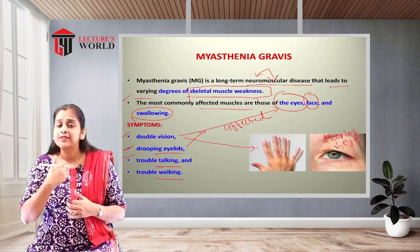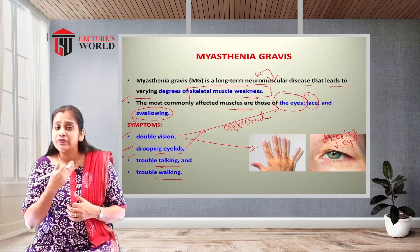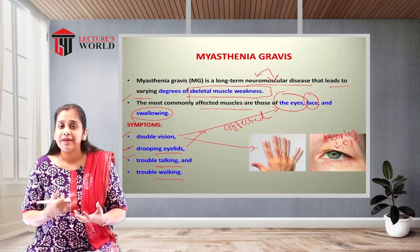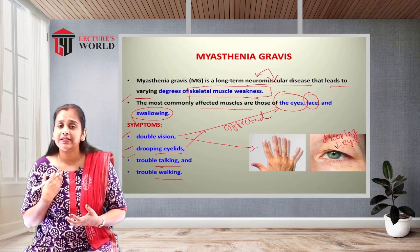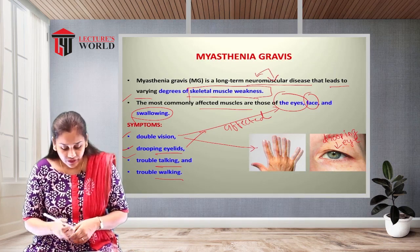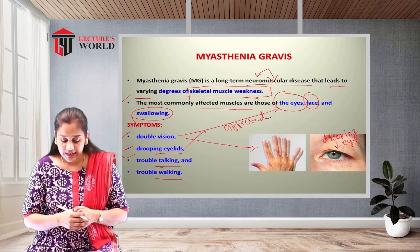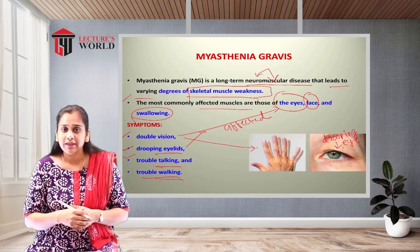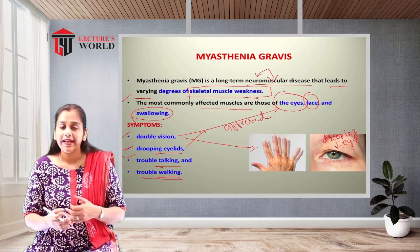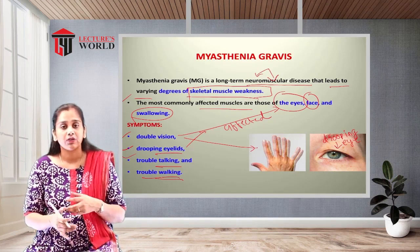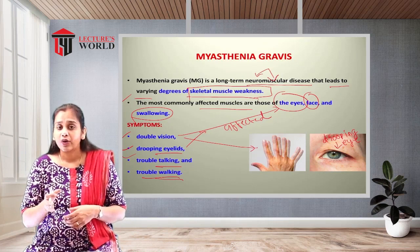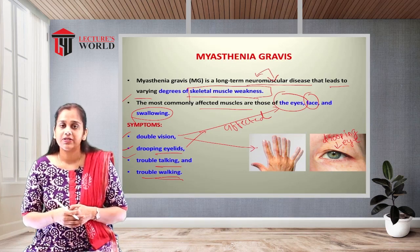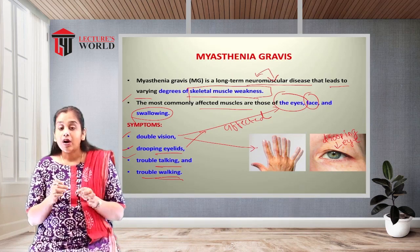Other symptoms include trouble in talking and trouble in walking. The muscles related to swallowing and the face become weakened, so the person is not able to speak properly. There is also trouble in walking because of whole-body muscle weakness, so the person cannot maintain their gait and cannot walk properly.